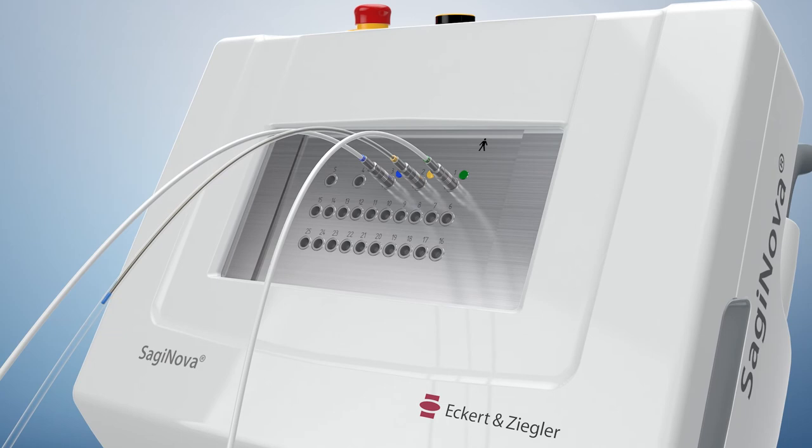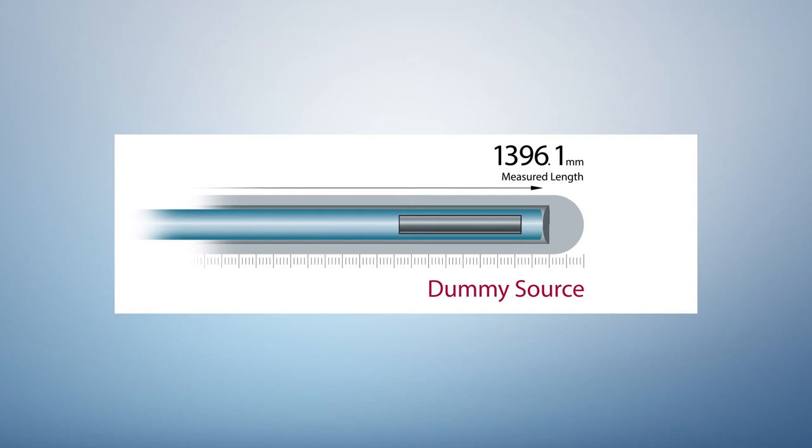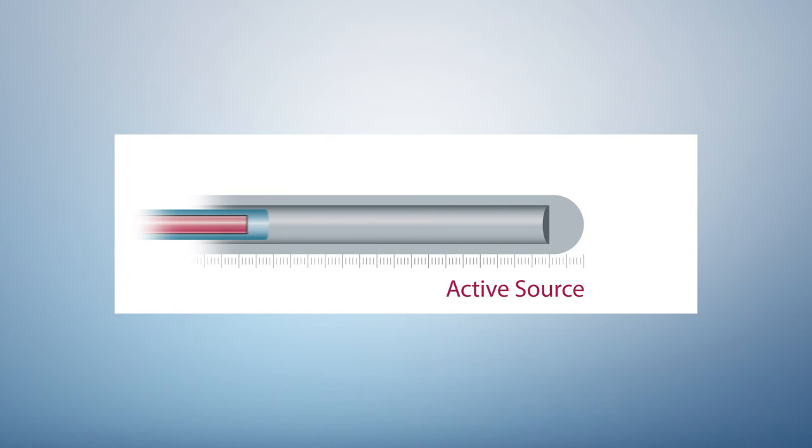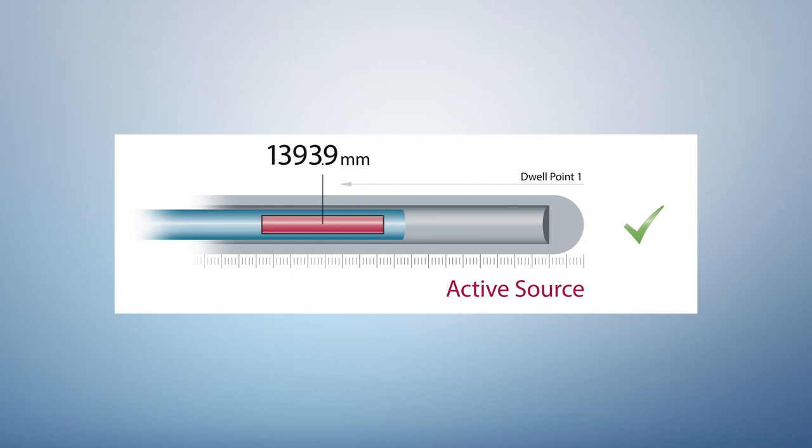Prior to each application, the dummy source measures the length of the complete channel to allow for the verification of the correct channel length. The precisely measured length of each individual channel is automatically used for accurate positioning of the active source relative to the tip.